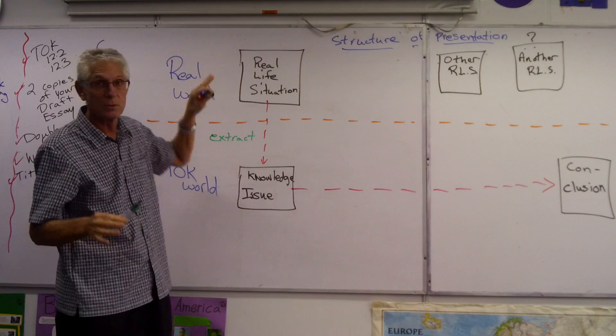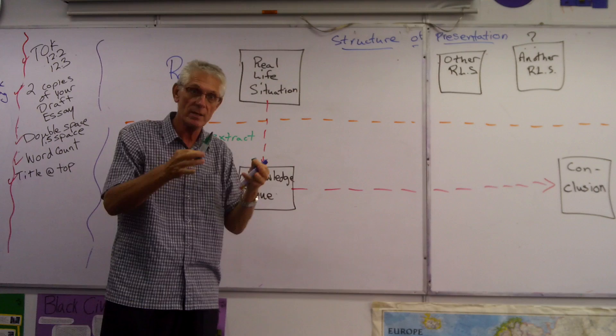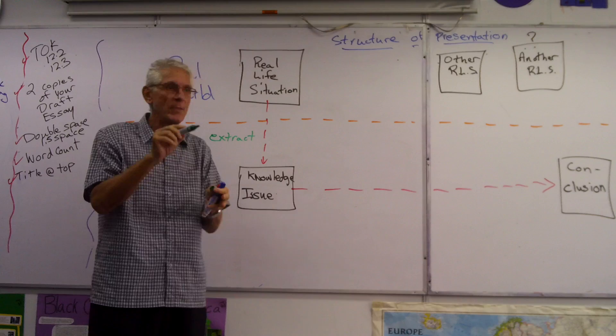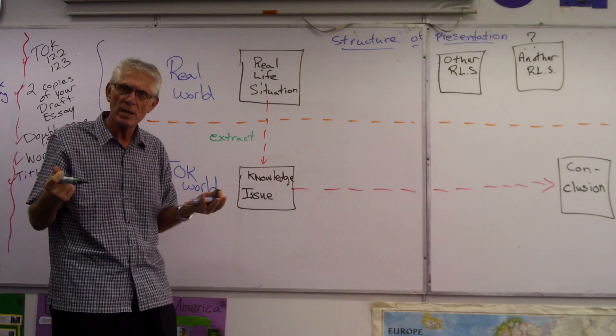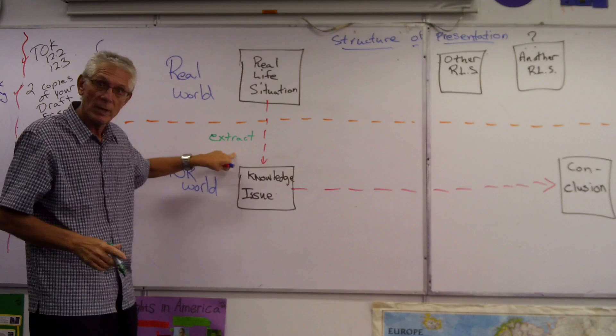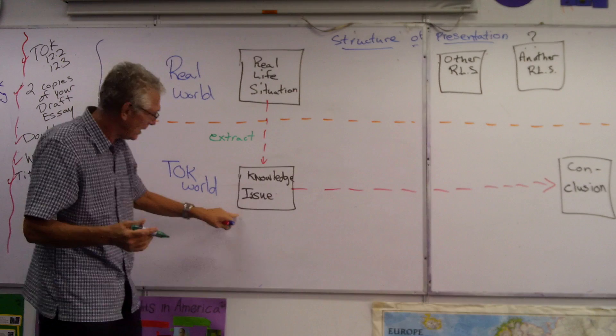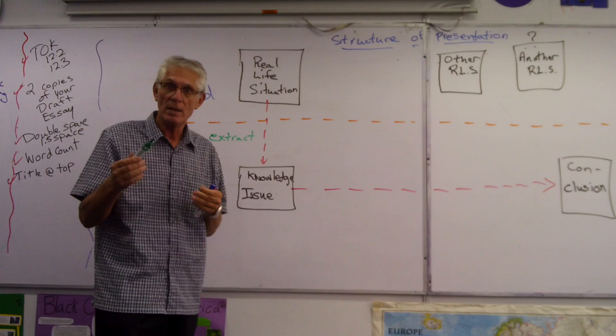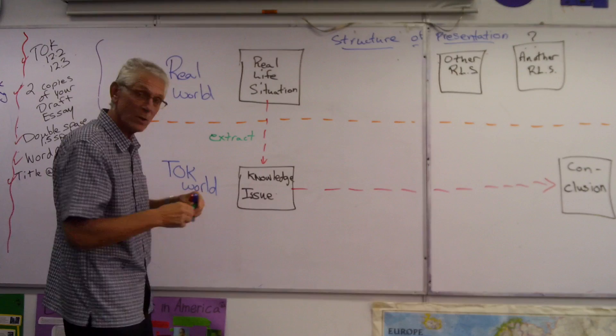I read an article last night about a survey — this is human sciences — a survey that found Singapore is the unhappiest or most discontented place in the world. They asked questions like: did you smile yesterday, do you look forward to the future, is the future positive or not? From that, I extract a KI along the lines of: how reliable is evidence in the human sciences?